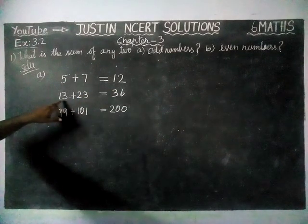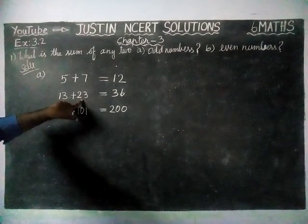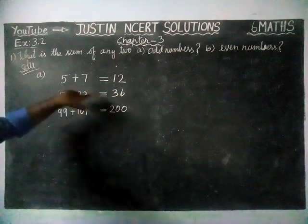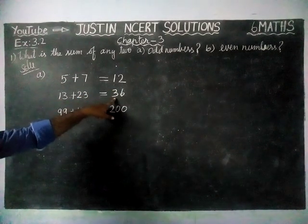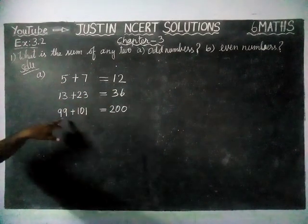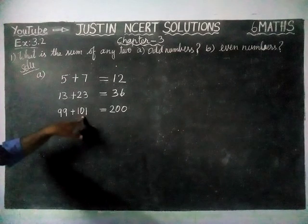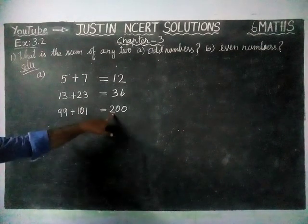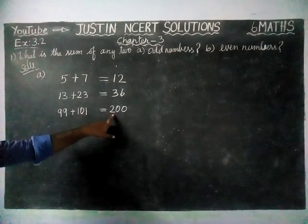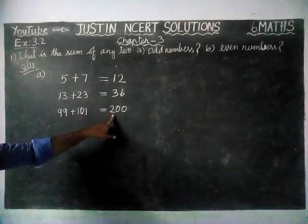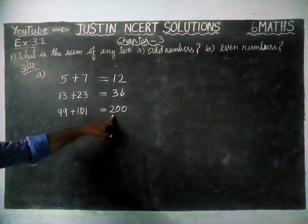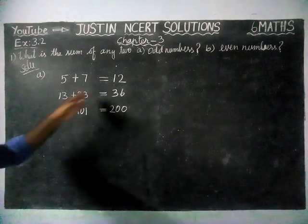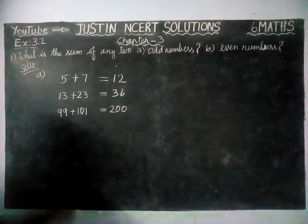And when we are adding 13 and 23, two odd numbers, we are getting 36. And 99 plus 101, two odd numbers, again we are getting 200, an even number. So we will take some other examples also.